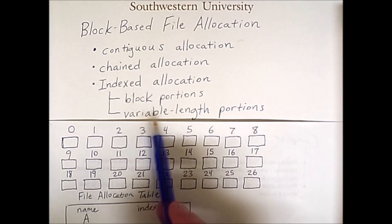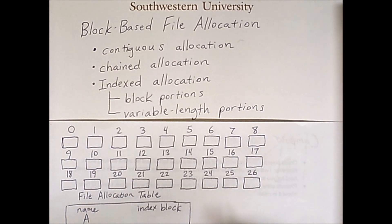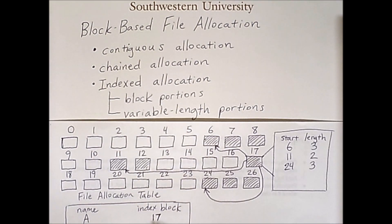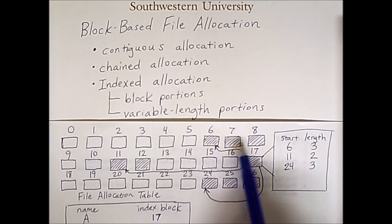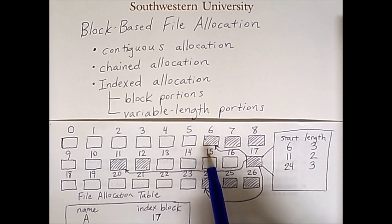Indexed allocation using variable length portions allows each portion that is pointed to by the index block to have a variable length. This means contiguous portions of the file can still exist but only require a single pointer from the index block. An example is the following. For file A the index block is node 17 right there. And now the index node contains both start blocks and lengths for each of the components of the file. So if we follow this link to block 6 we see that the next one two three blocks are the first part of the file.